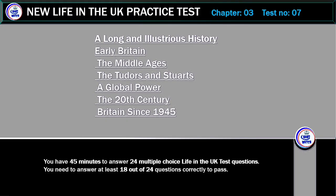New Life in the UK Test, Chapter 3, Test 7. A long and illustrious history: early Britain, the Middle Ages, the Tudors and Stuarts, a global power, the 20th century, Britain since 1945. You have 45 minutes to answer 24 multiple choice Life in the UK test questions.